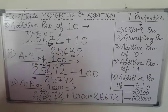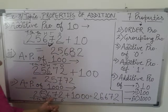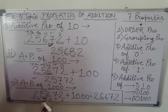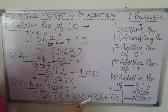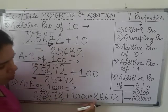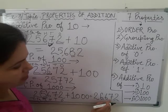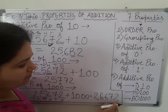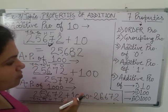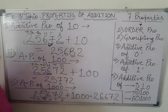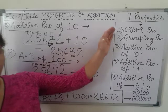Previously, the number is 25,672 but by adding 1000 to this number, we got 26,672. So this is the last property of addition.